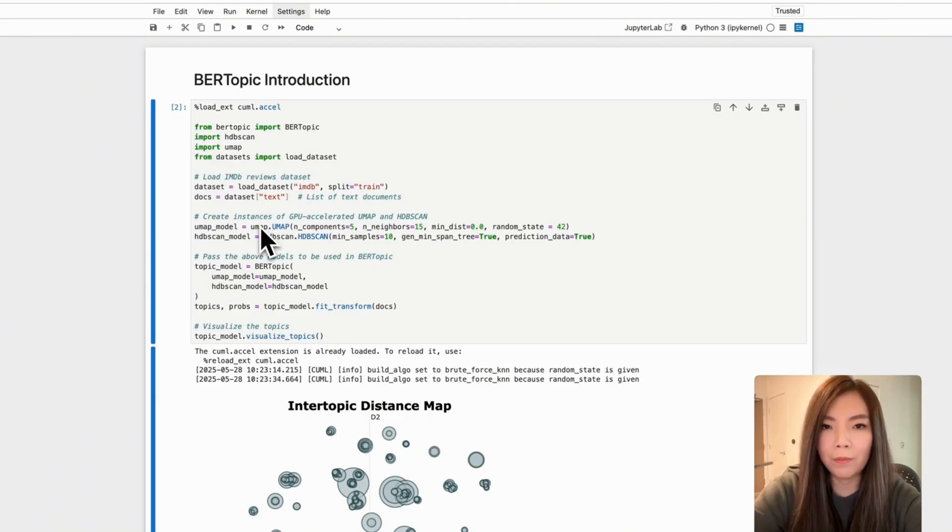Instead of the default dimensionality reduction and clustering, we enhance performance by using UMAP for dimensionality reduction and HDBSCAN for clustering. UMAP is configured with five components and 15 neighbors, while HDBSCAN is set with a minimum sample size of 10. These models are then passed into BERTopic to form a customized pipeline that improves clustering quality and scalability.